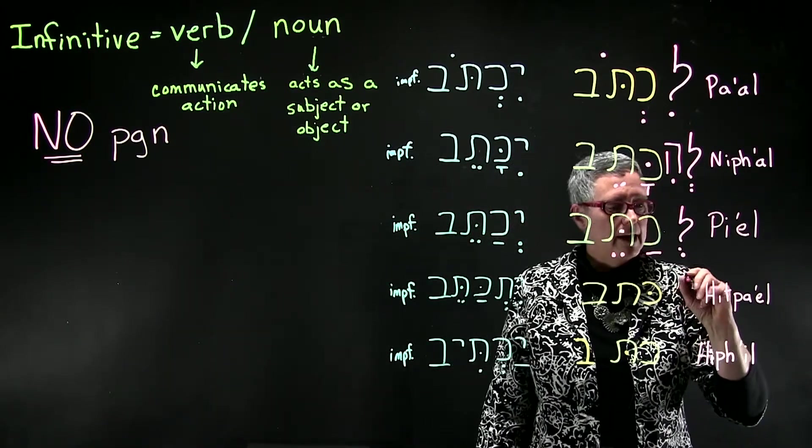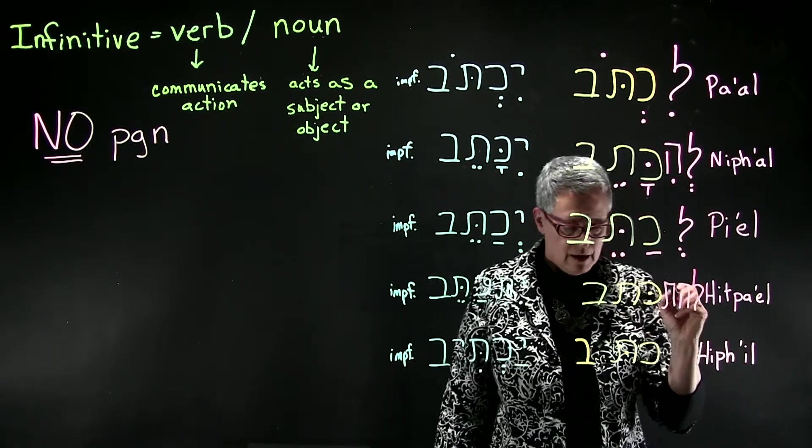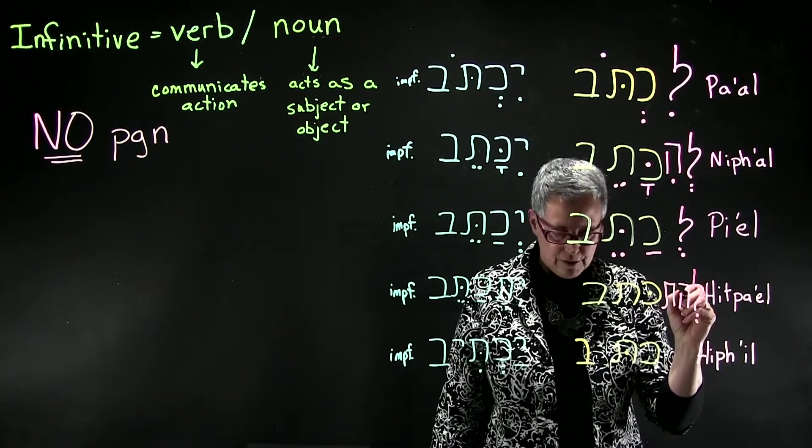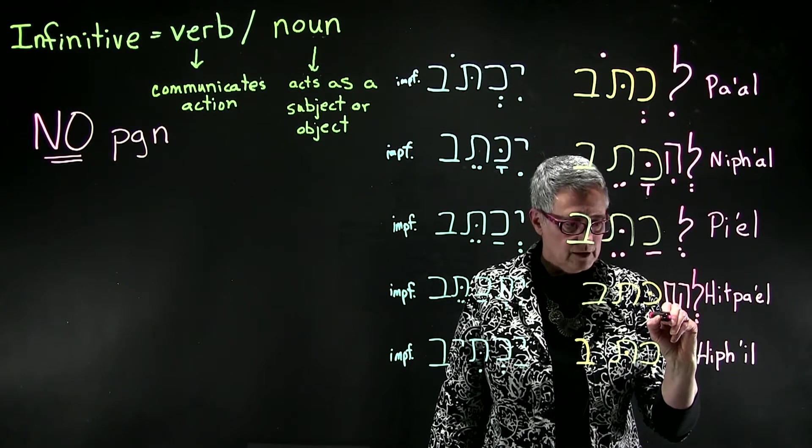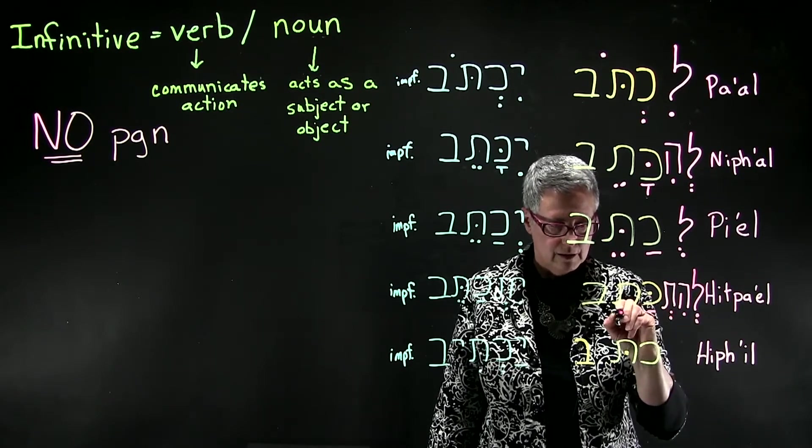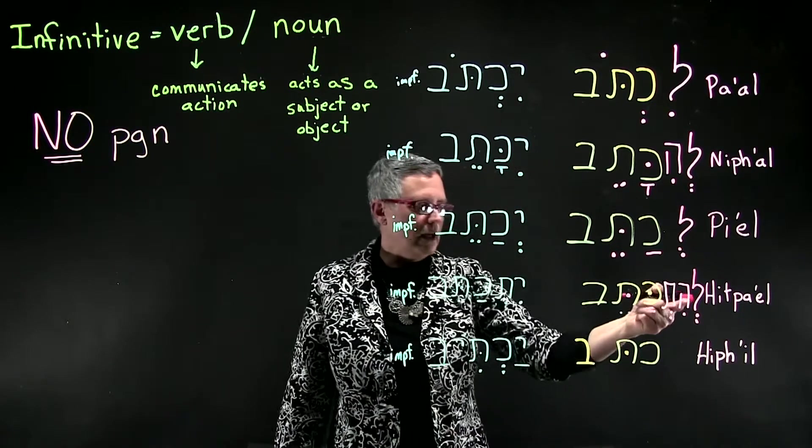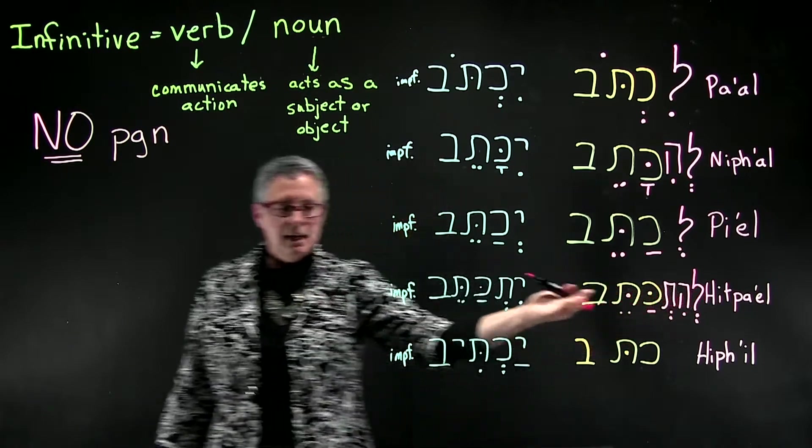Hitpa'el. We'll add our preposition with the shva, and then dagesh in the middle root letter. Hit after the preposition. Lahitkatel, like yitkatel in the imperfect.